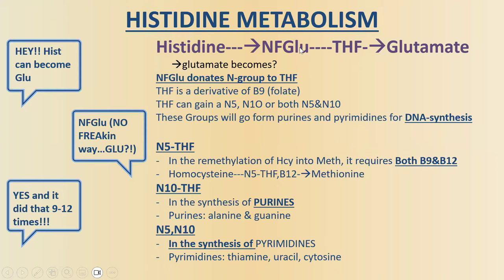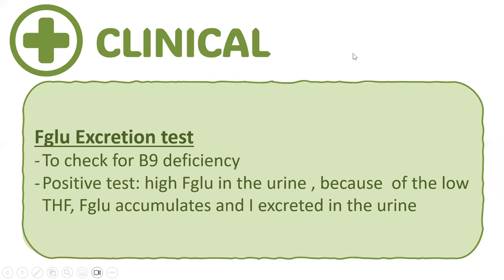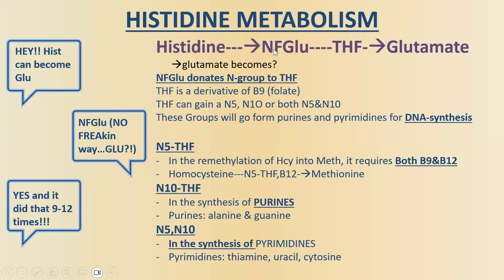Clinical note: the FIGLU excretion test checks for B9 (folate) deficiency. A positive test means FIGLU is found in the urine, indicating that B9 is deficient. Normally, FIGLU is converted using THF (which requires B9); without sufficient B9, FIGLU accumulates and is excreted in urine, showing elevated formiminoglutamate levels.